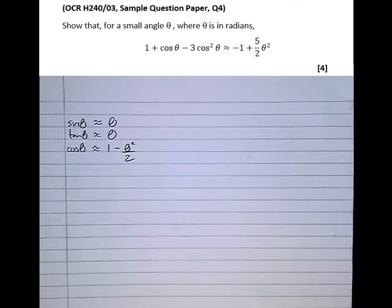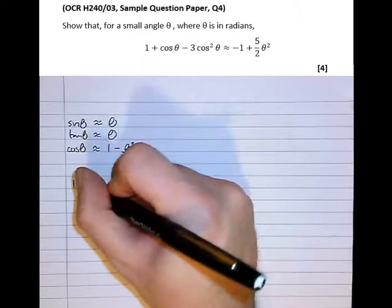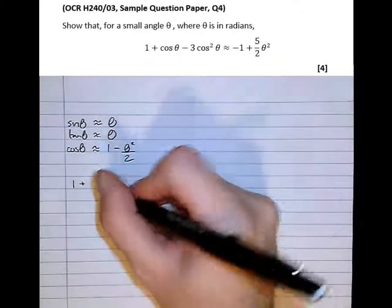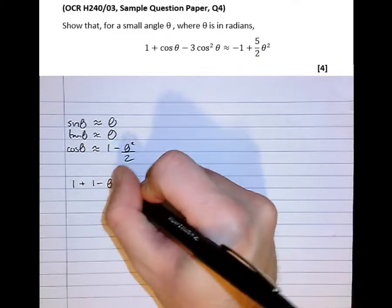So it says, show that for a small angle theta, where theta is in radians, 1 plus cos theta minus 3 cos squared theta is approximately equal to that. So let's go for it. So we've got 1 plus cos theta, because the angle's small, is approximately equal to 1 minus theta squared over 2.